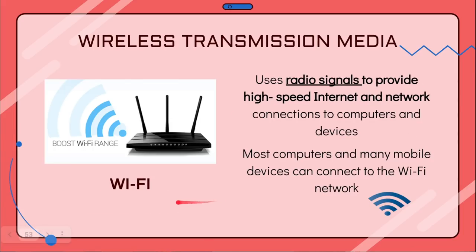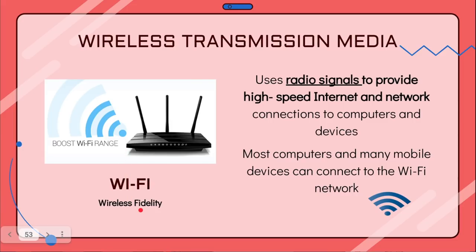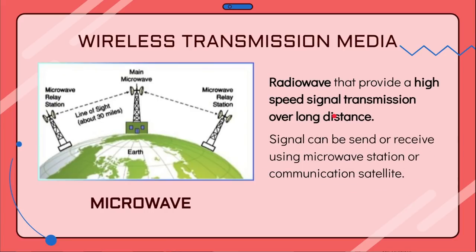Then we have Wi-Fi, which is short for wireless fidelity. 'Wireless' means it uses radio waves instead of cables, and 'fidelity' means long-lasting support. Wi-Fi uses radio signals — same as Bluetooth, both use radio signals. Nowadays, most computers and mobile devices such as smartphones are able to connect to a Wi-Fi network.